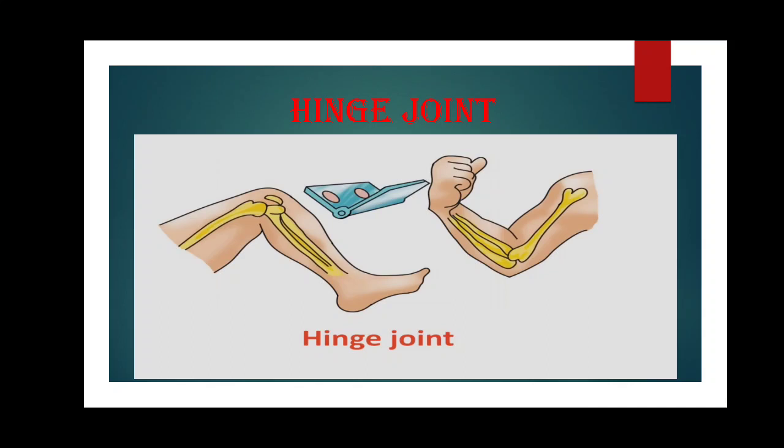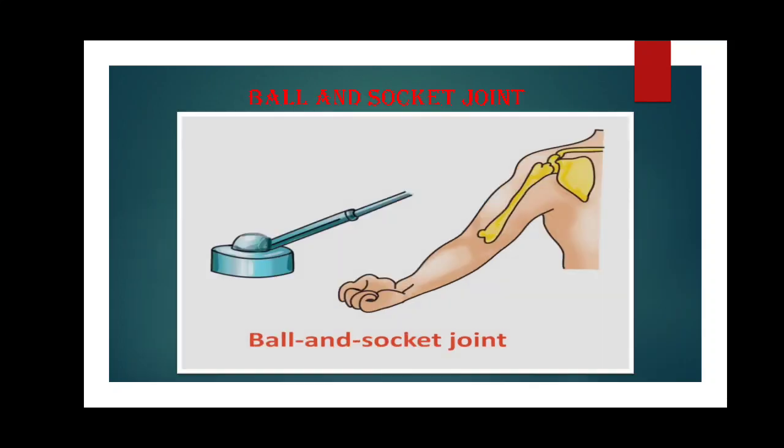Next is the ball and socket joint. In this type of joint, the rounded edge of one bone fits into the hollow end of another. This allows the bone to be moved in nearly all directions. This type of joint is found in your shoulder between the humerus and the shoulder bone, and also in your hip between the femur and the hip bone.